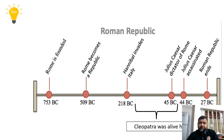Cleopatra was alive within 218 to 45 BC. Cleopatra had relations with Julius Caesar. Then in 44 BC, Julius Caesar was assassinated. And afterwards, in 27 BC, the Rome Republic ends. So this is the timeline — we find Cleopatra was alive between the period of 218 BC to 45 BC.